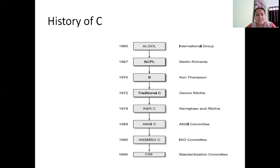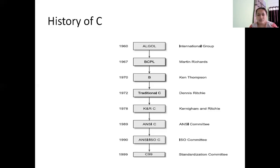Next, in 1999, yet another standardization was done for C, producing C99. Between 1990 and 1999, C++ and Java were developed from C, and these were more powerful languages since they supported object-oriented concepts. People felt that C could be enhanced by adding more features, so C was standardized again in 1999. That version, called C99, is what is still in use today.